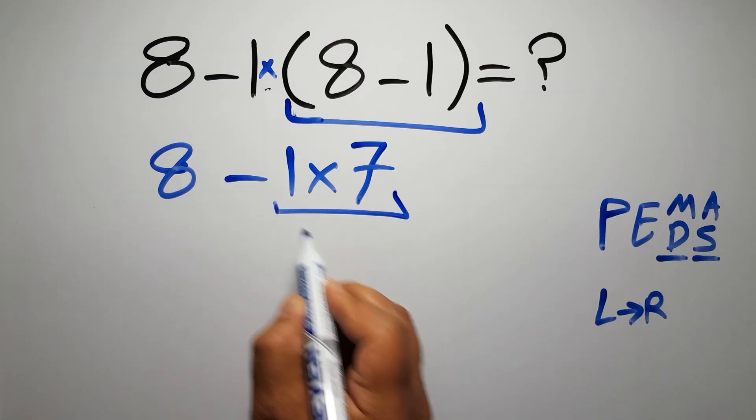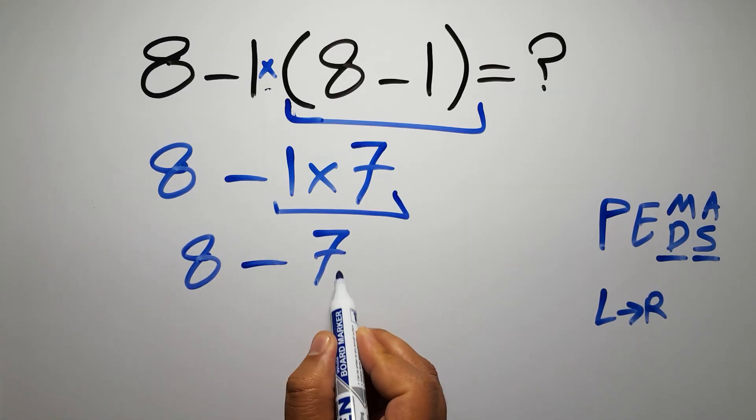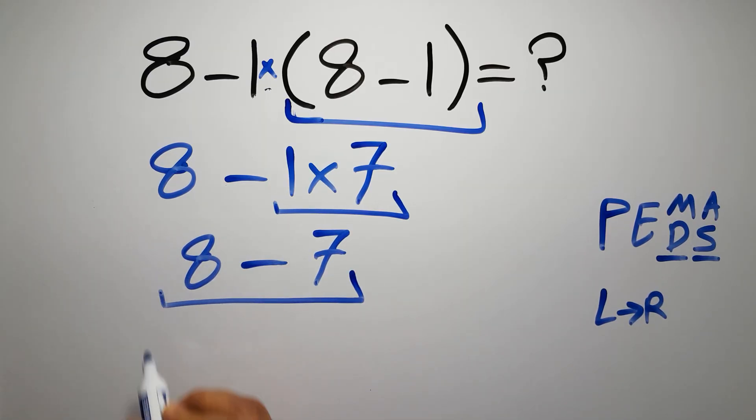So 8 minus 7, which equals 1, and this is our final answer to this problem. The correct answer is 1.